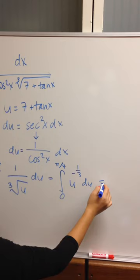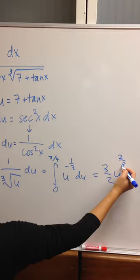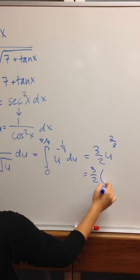which will be 3 over 2 u to the 2 over 3. We're putting back the original u.